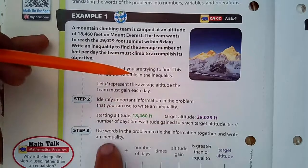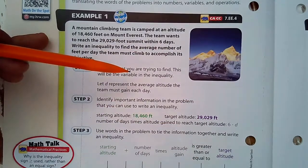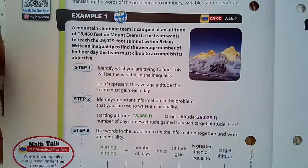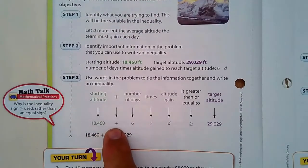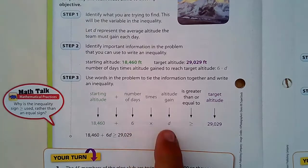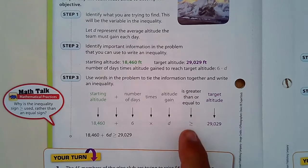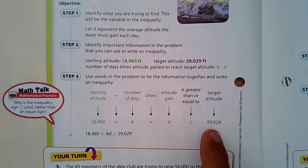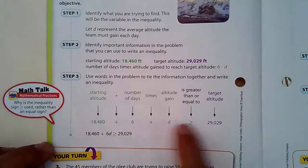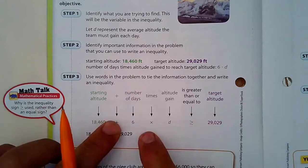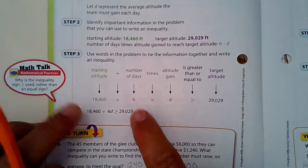And the number of days times the altitude gained to reach the target is six times d. So use the words in the problem to write our inequality. Our starting altitude was 18,460 feet plus the number of days times the altitude gained for each of those days. That has to be greater than, or it could be equal to, because they want to reach the target. So it could be equal to, to reach the target, or if they go over that, they still reach the target of 29,029 feet, that target altitude. So when we put this all together and we shrink it, it becomes this. And there you go.